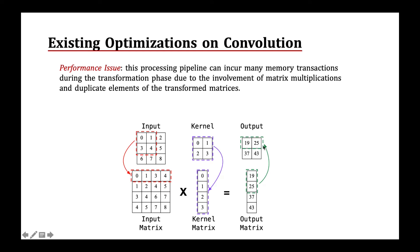However, this process pipeline can incur many memory transactions during the transformation phase and many duplicate elements in the input matrix, such as duplicate-once and duplicate-twice cases. In this work, we try to optimize the memory performance of convolution by reducing memory transactions.